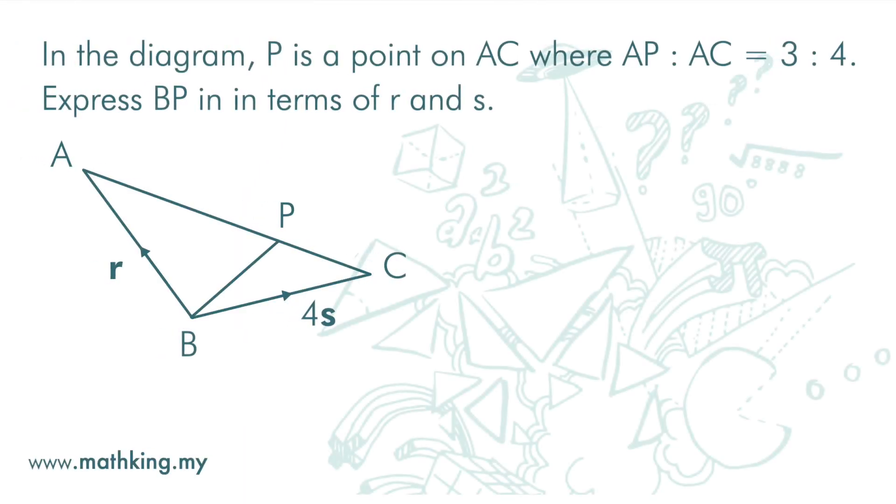In the diagram, P is a point on AC where AP to AC equals 3 to 4. Express BP in terms of R and S.